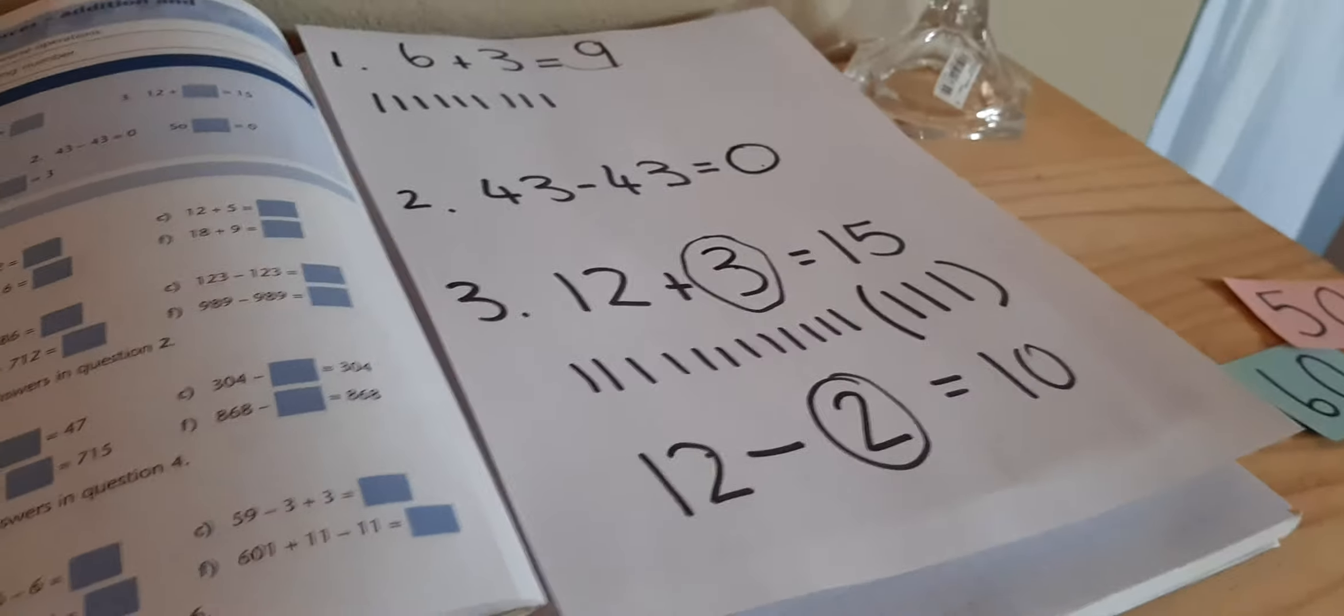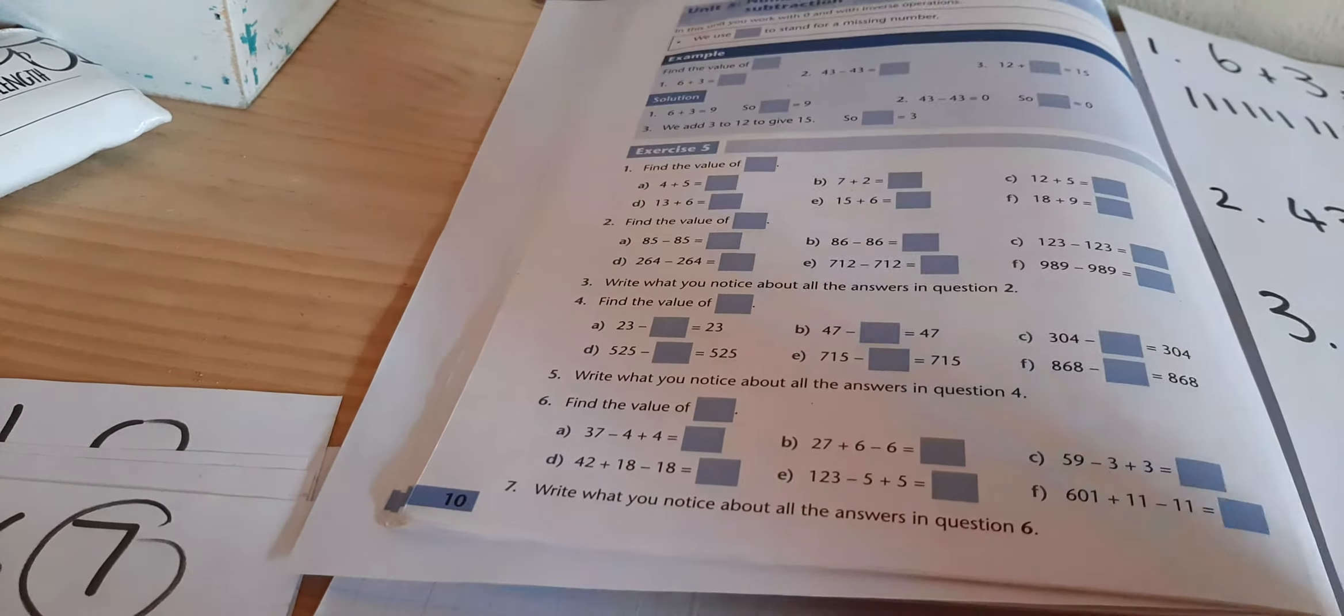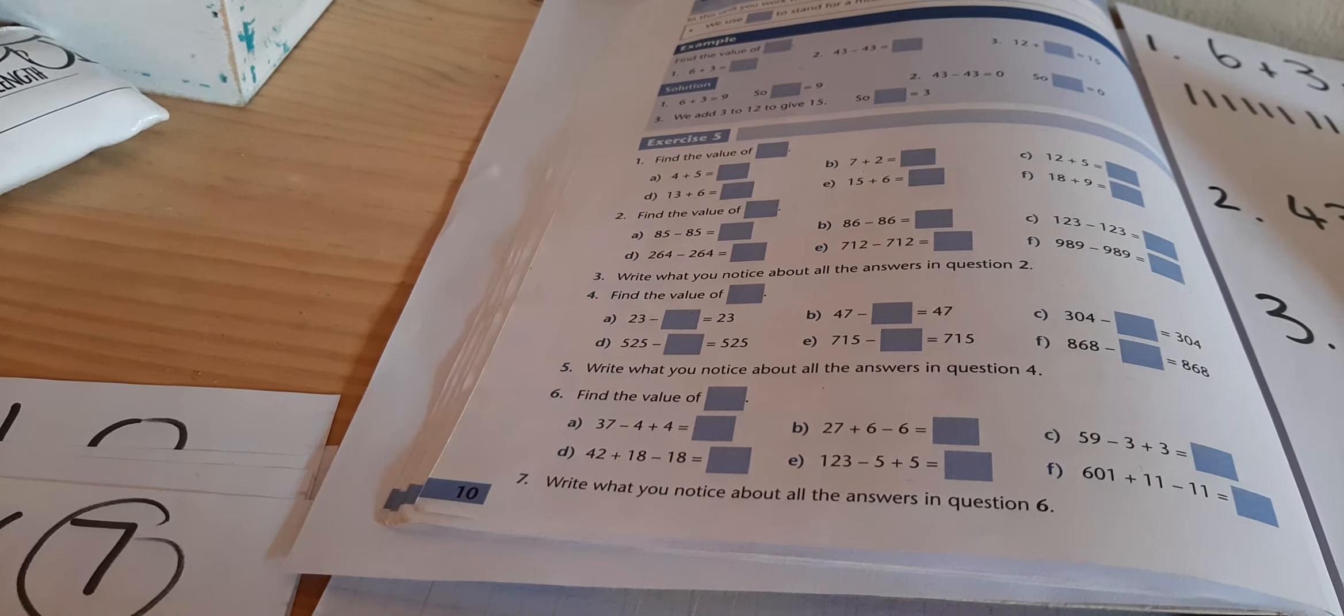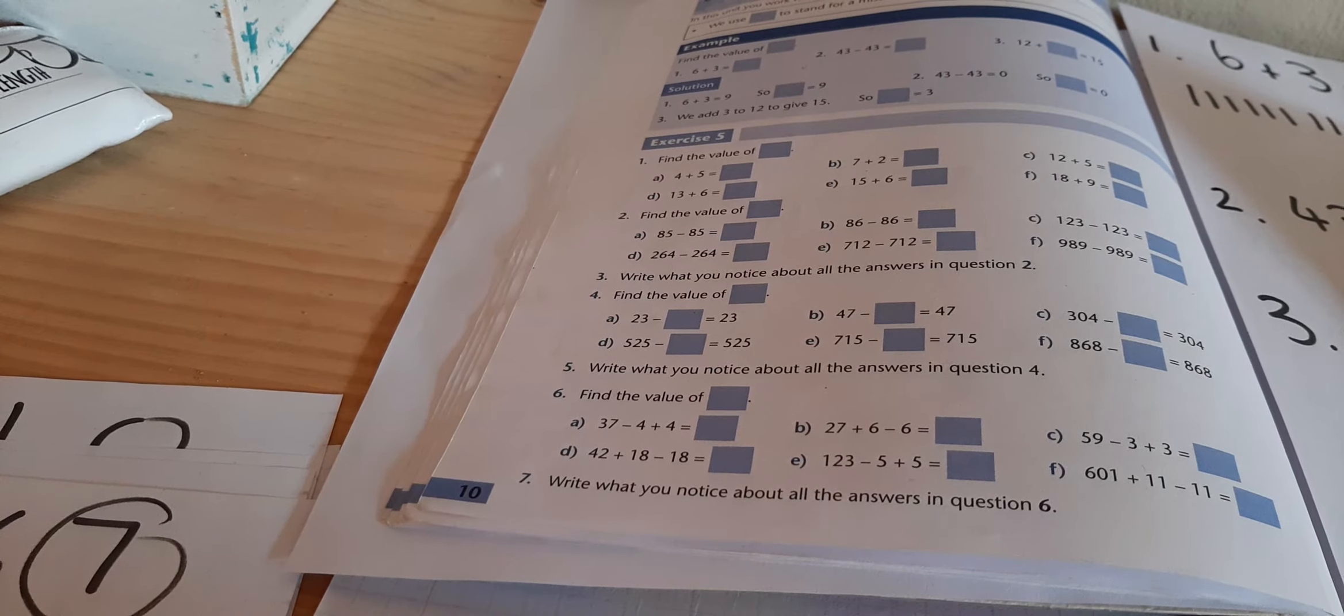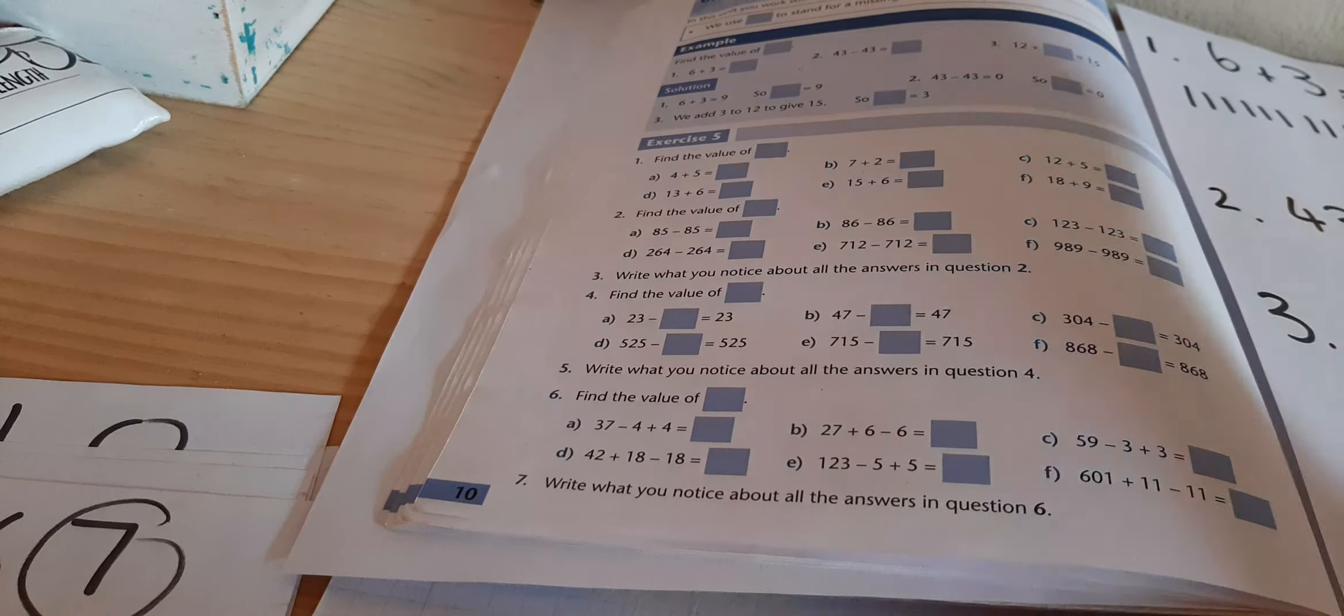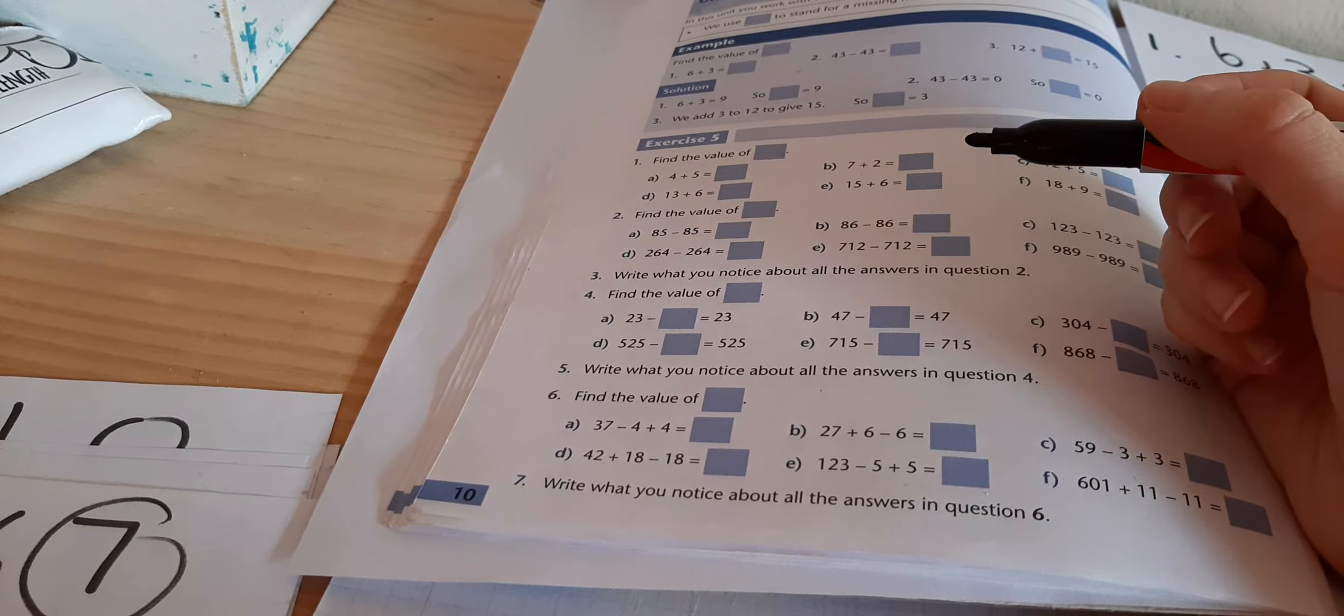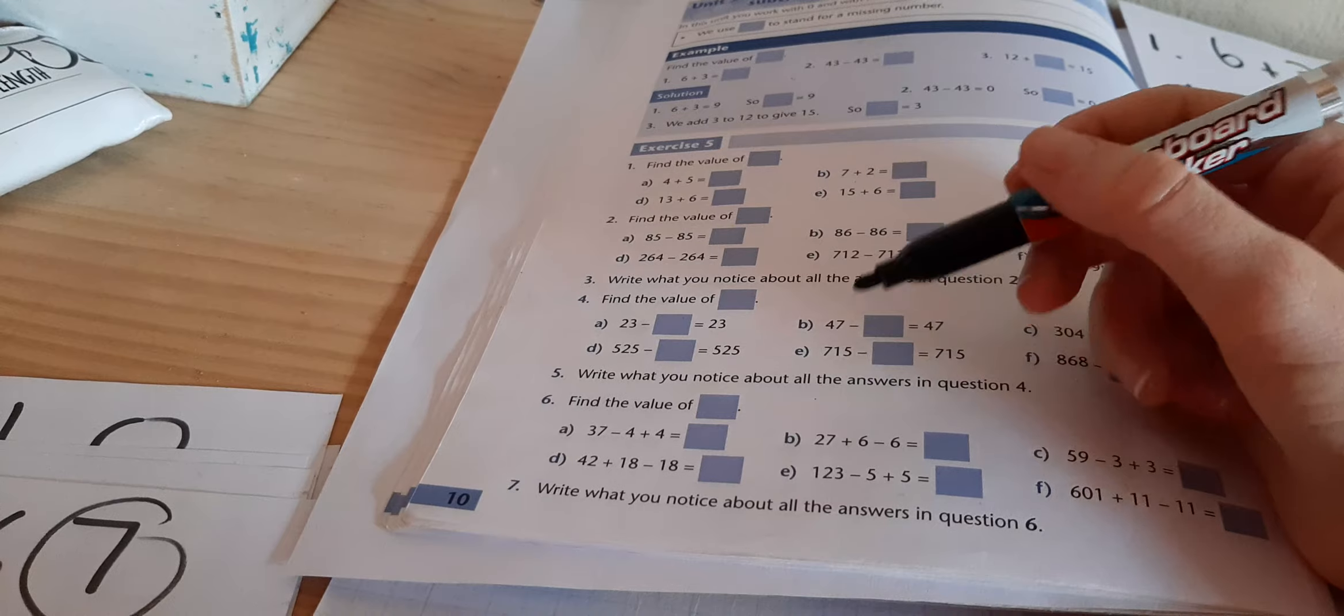So all you have to do for there is write those answers. Please write the question and the answer because it's a number sentence. And then just for question 7, you have to write your answer in words, in cursive. And yeah, just try and be as creative as you can and look at all of your answers for question 6 and see, oh, have I noticed a pattern? Are they all the same number? Are they different? What happens when I plus and minus the same number?